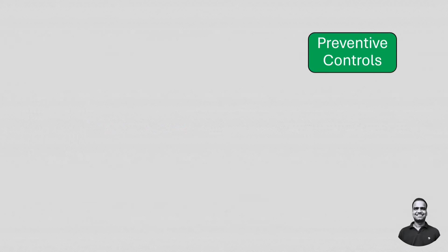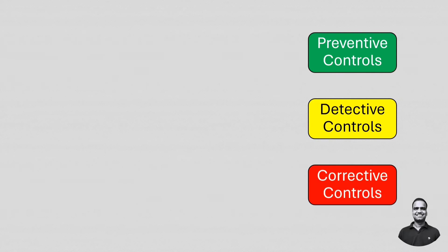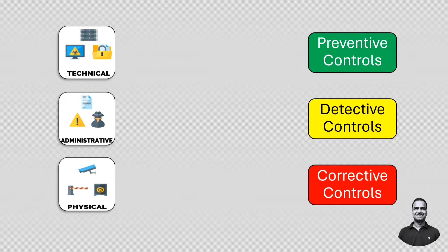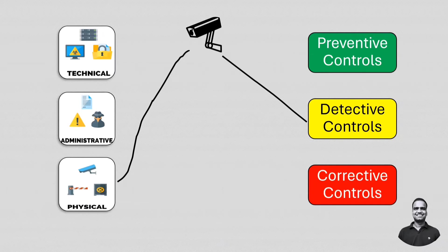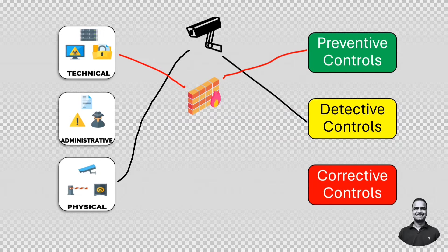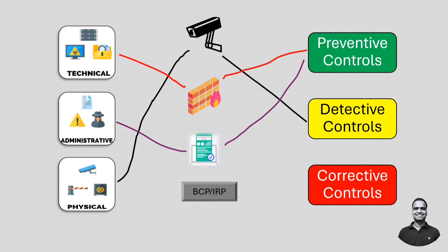Control function can be preventive, detective, or corrective, while control type can be physical, technical, or administrative. For example, CCTV and surveillance is a detective control but also a physical measure. A firewall is a preventive control and a technical control. When a new employee signs an acceptable use policy, that is both a preventive control and an administrative control. Implementing a business continuity plan or incident response plan represents corrective controls that are administrative measures.